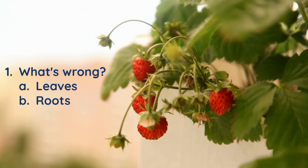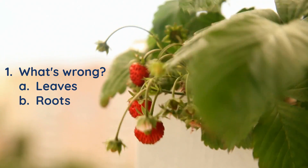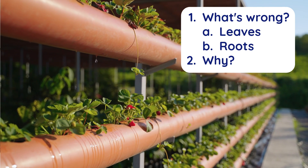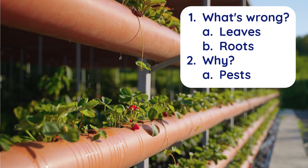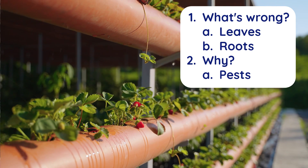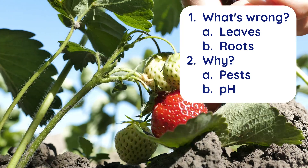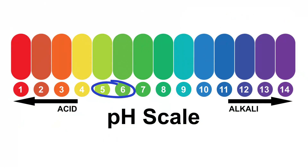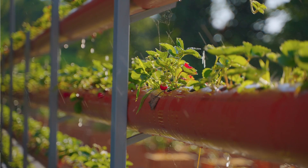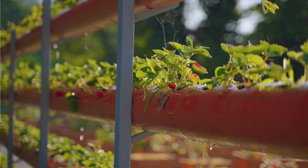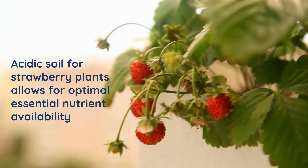We've talked about the roots and the leaves. Now let's talk about why they look like this. One reason the leaves are struggling is pests. The second reason these strawberry plants might be struggling is the pH of the soil. Strawberries in particular like slightly acidic soil, typically a range of 5.3 to 6.5 — they can tolerate more neutral soil but prefer slightly acidic. Slightly acidic soil allows optimal nutrient availability for uptake of those nutrients in the plant.